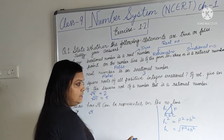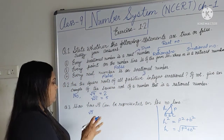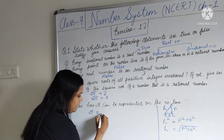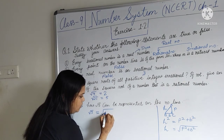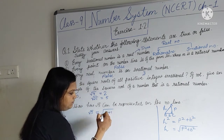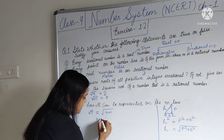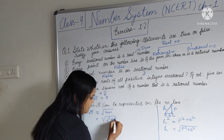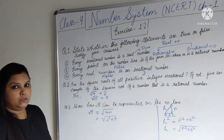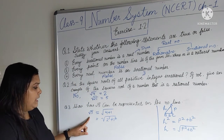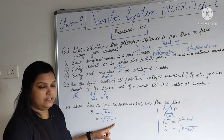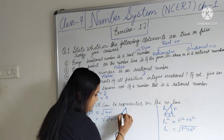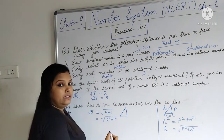We are going to use this Pythagoras theorem to represent √5. So √5 can be written as √(4 + 1), which can be written as √(2² + 1²). So √5 = √(2² + 1²). Now we are going to represent this triangle on the number line.